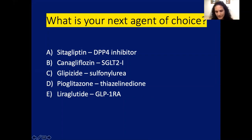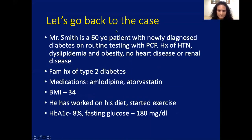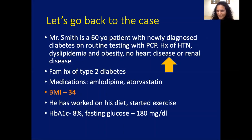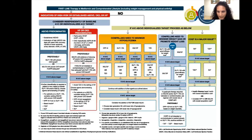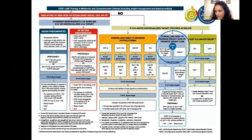Going back to the case: same 60-year-old man, newly diagnosed diabetes, key features are BMI of 34 and no heart disease or renal disease. When you go back to the ADA algorithm, weight loss would definitely help with insulin resistance and could reduce his A1C. He has no history of heart disease, so you don't necessarily need to go down the cardiovascular pathway. There's no compelling need to minimize hypoglycemia either — he's just done metformin. We'll also talk about cost.